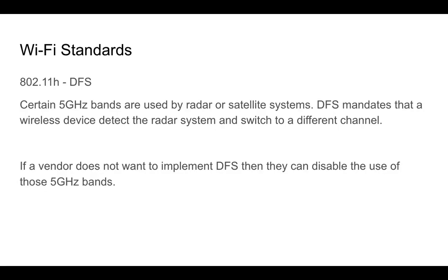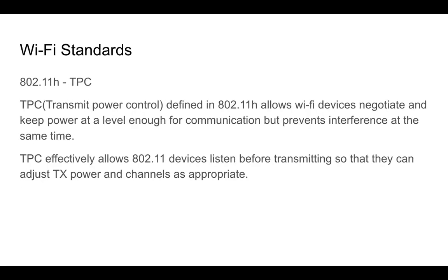There are some other important standards. 802.11h provides two key capabilities. The first is DFS — Dynamic Frequency Selection — which handles certain 5 GHz bands used by radar or satellite systems. The second is TPC, or Transmit Power Control, which allows a Wi-Fi device to negotiate and keep power at a level that is good enough for communication but prevents interference. TPC allows Wi-Fi devices to listen before transmitting so they can adjust transmit power and channels appropriately.